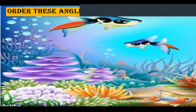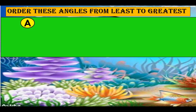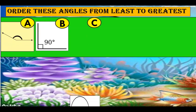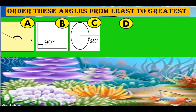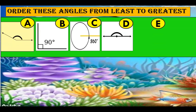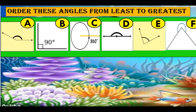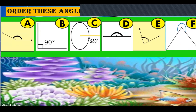Now order these angles from least to greatest. Six different angles are displayed and I want you to label the correct angle from smallest to greatest. First, arrange the smallest one and move towards the greatest angle.